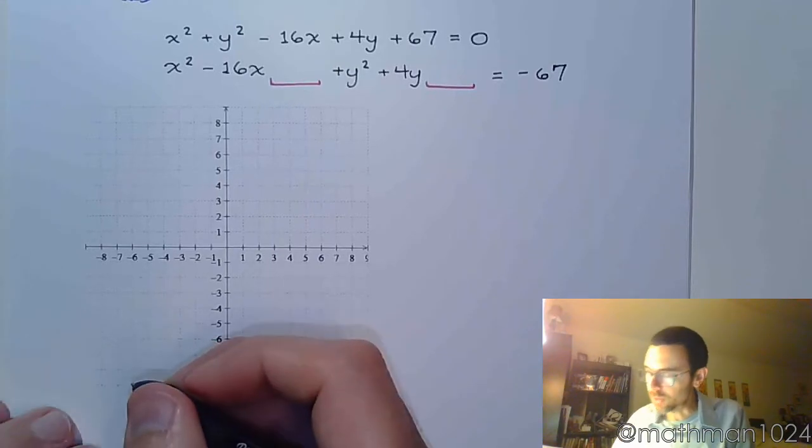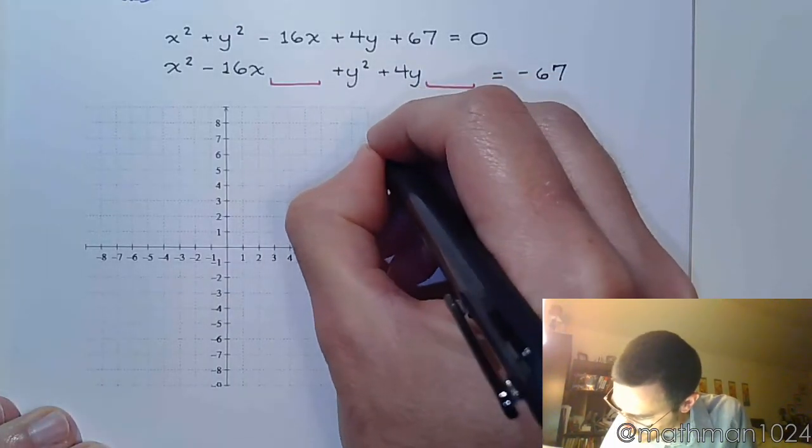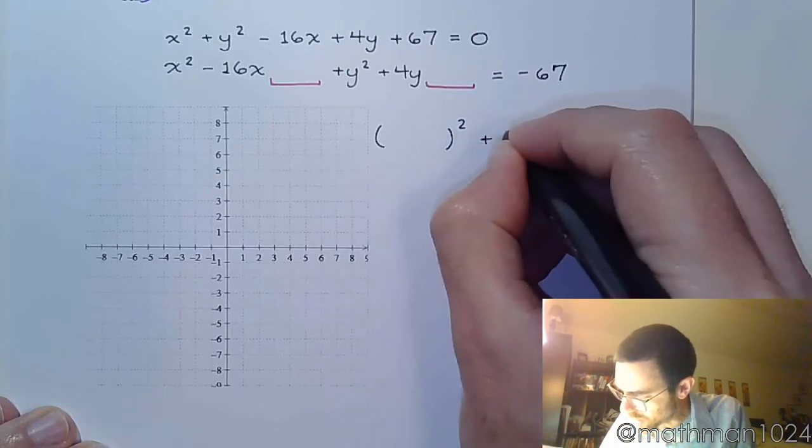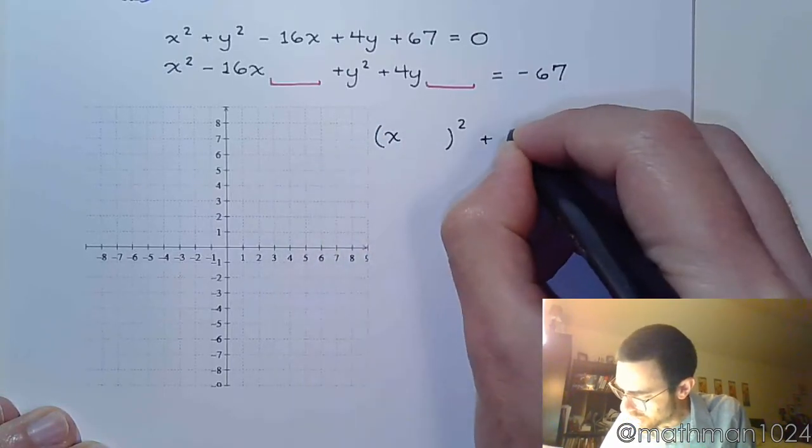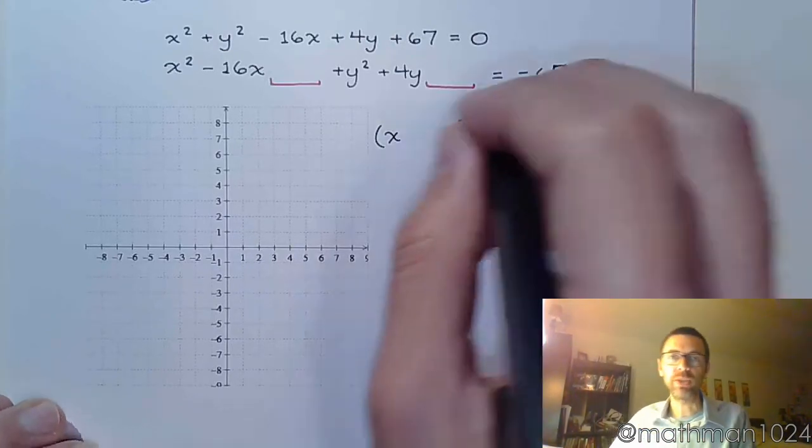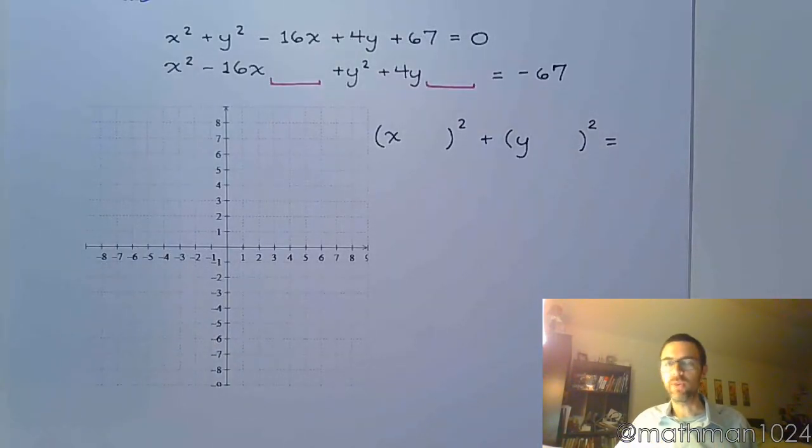Now we go to complete the square. I know I'm supposed to have something with an x and a square. And I'm supposed to have y with a square. And on the right side, it's going to be some constant, which is going to lead me to my radius.